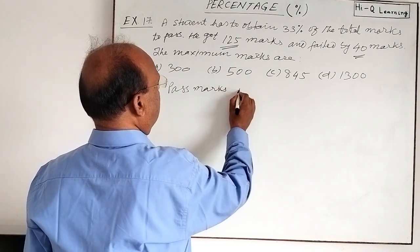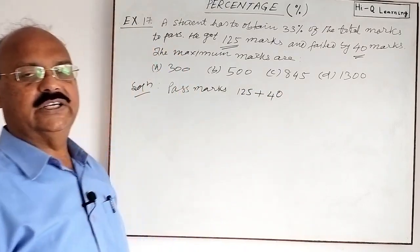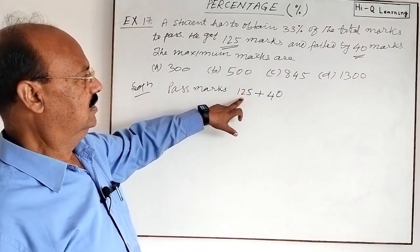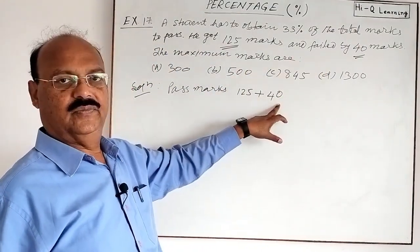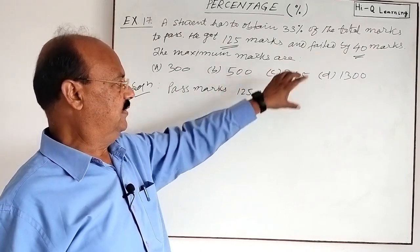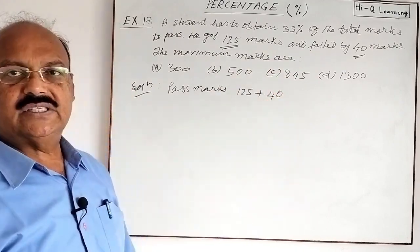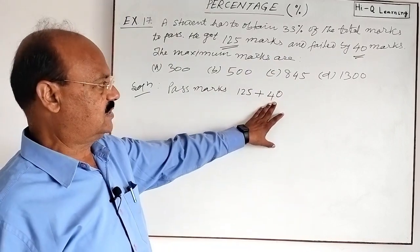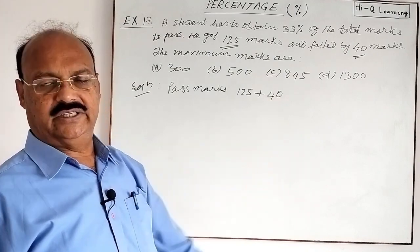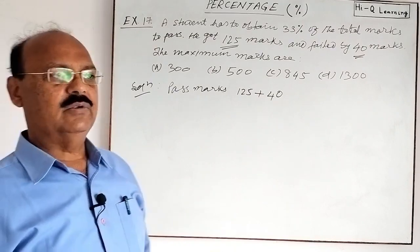It means pass marks is 125 plus 40. Try to understand. He has got 125 marks and failed by 40 marks, so marks obtained and the marks from which he has failed, if you add this to marks you will get the pass marks. If the student would have achieved 40 marks more, then he would have passed the examination, means he would have got 33 percent of the total marks.